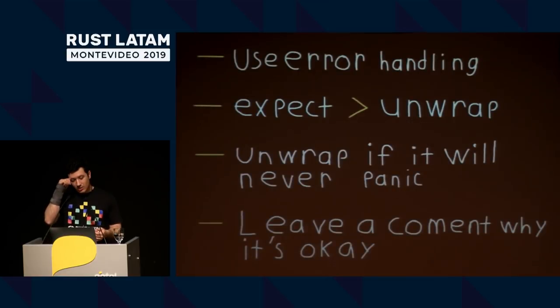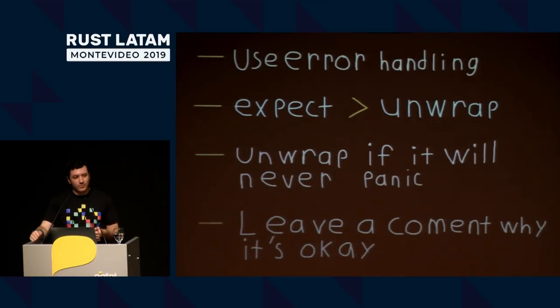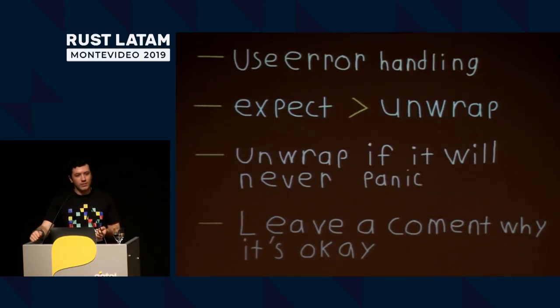But when your program starts getting larger, it becomes a problem. At work I spent about a week just trying to remove all the unwraps — it was the hardest refactoring I've ever had to do. The PR never ended up getting merged because it was just too big to review. Once unwrap is in your codebase, it's kind of hard to take out. So use error handling as soon as possible; libraries like 'failure' are really good for this. The faster you start using error handling, the easier it is to keep it that way.